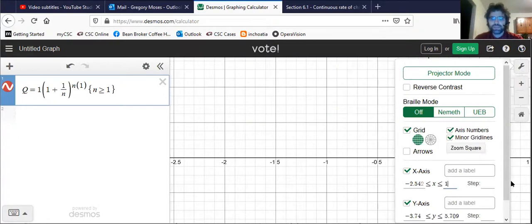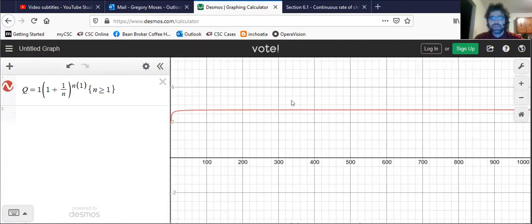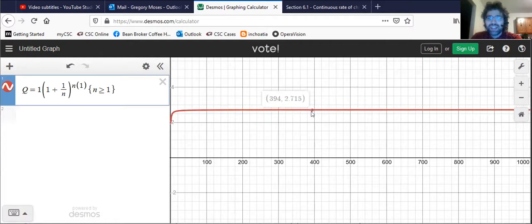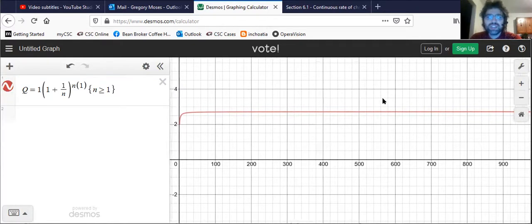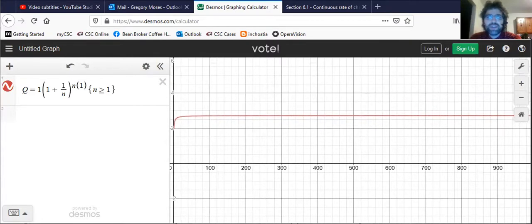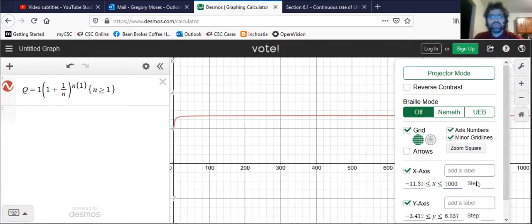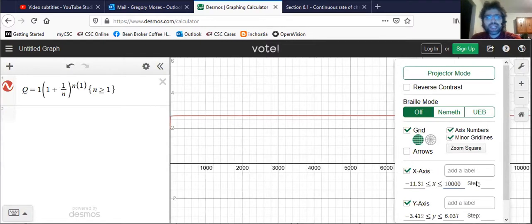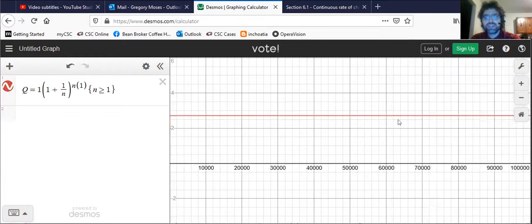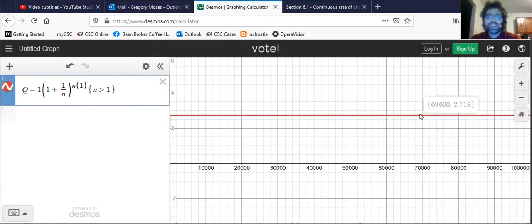But we can see the limit. So increasing the number of times we compound radically is not radically increasing the value of the investment. Instead, we have what appears to be a horizontal asymptote. As the number of times we compound this investment gets bigger and bigger, this investment basically just stops changing.